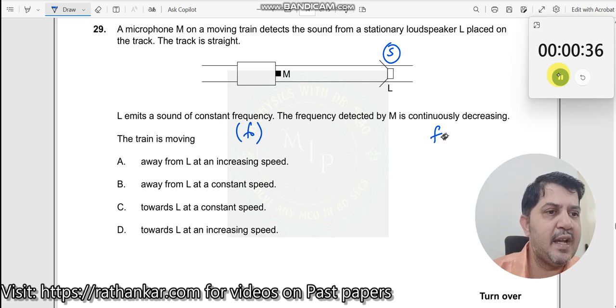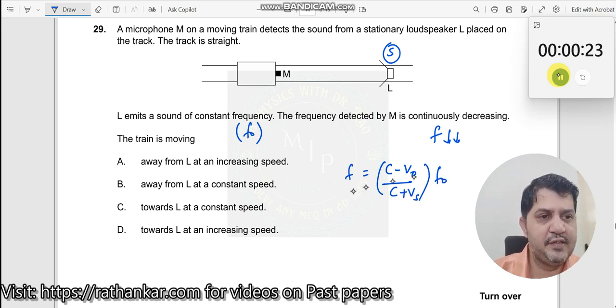This value of your apparent frequency is decreasing, which formalizes your Doppler effect. The Doppler effect formula gives you F apparent frequency equal to C minus V observer divided by C plus V source, into F naught. This is the formula.